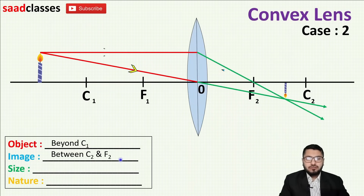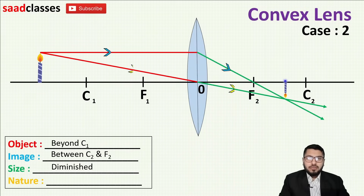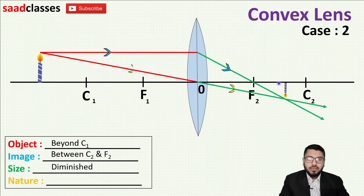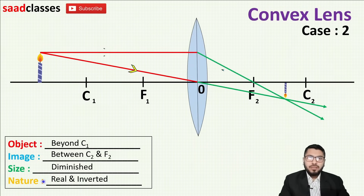The image position is between F2 and C2. The size is diminished — comparing the size of the object and the image, the image is smaller. The nature is real and inverted — the real image is always inverted.